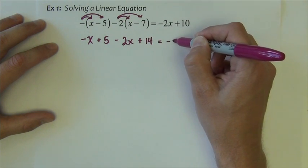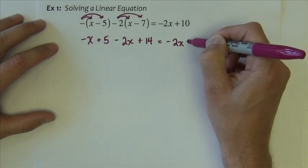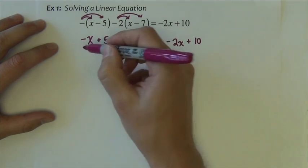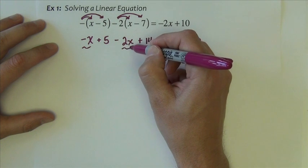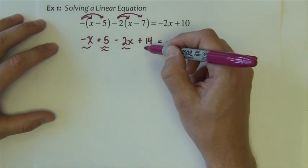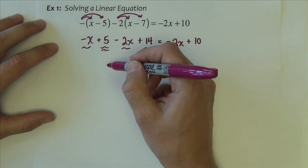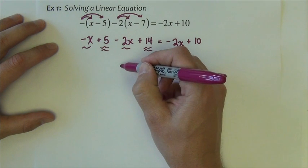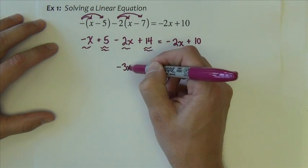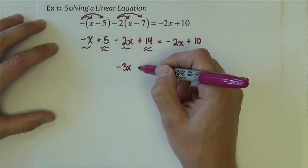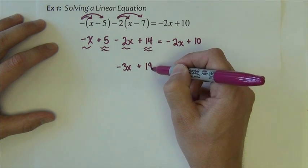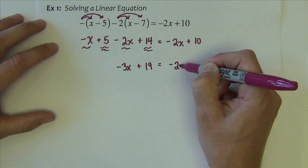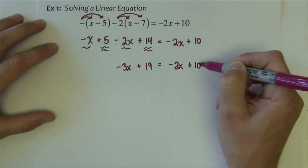Again, the two negatives multiply to make positive, equals negative 2x plus 10. Then I like to combine my like terms on the left-hand side, so negative 1 plus negative 2 make negative 3x, 5 and 14 make 19, that equals negative 2x plus 10.